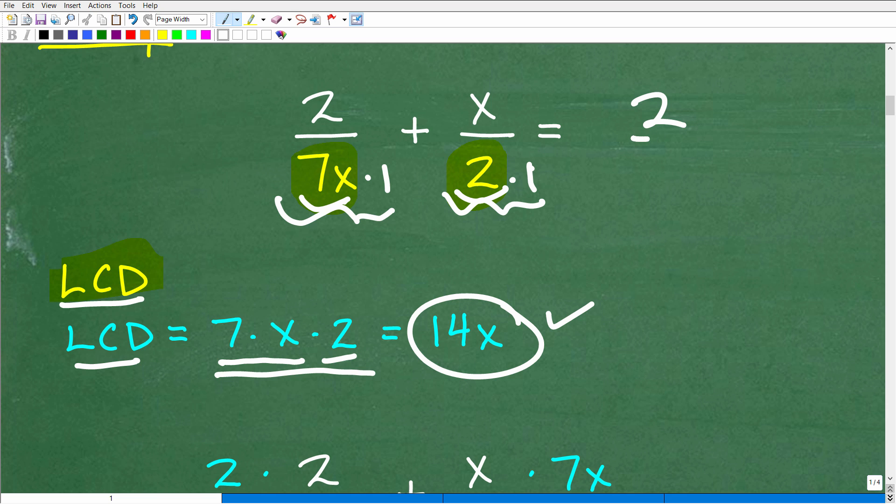Okay. Again, if our arithmetic problem was two over seven plus one over two, the LCD would be 14, but we have an X down here in our problem, so our LCD is 14 X. Okay. So what do we need to do with that 14 X?